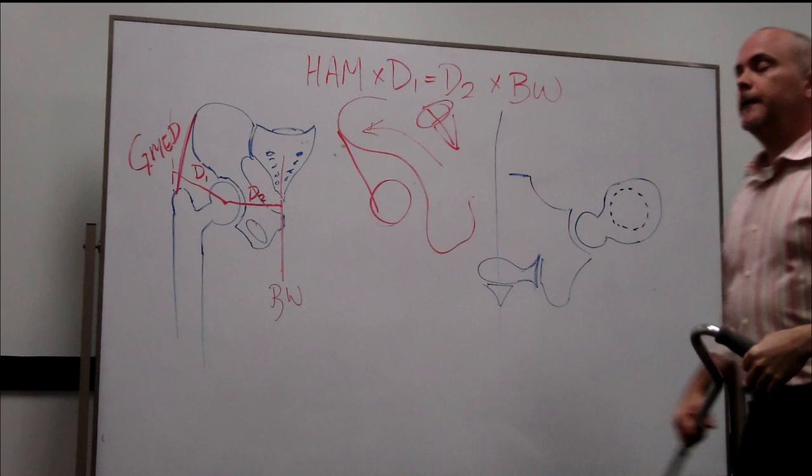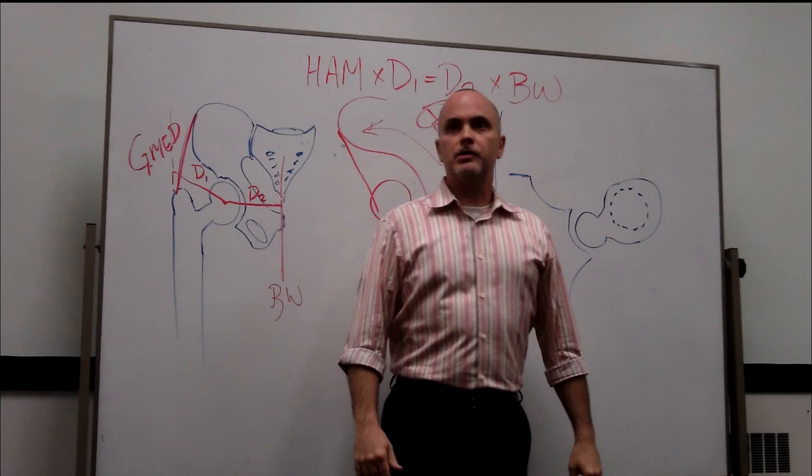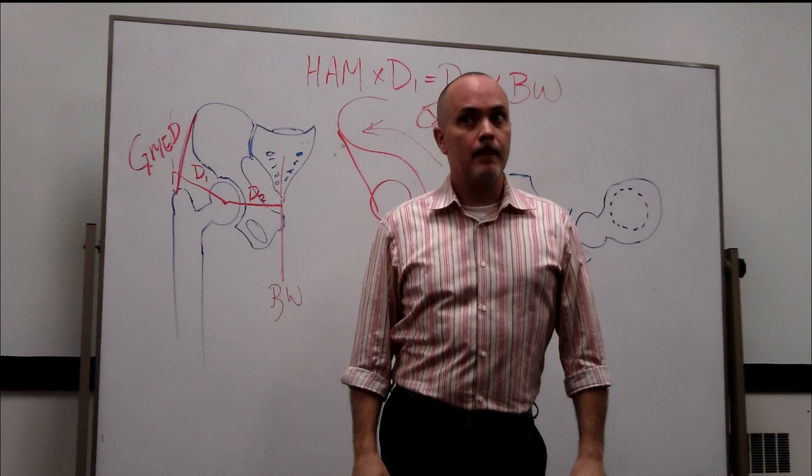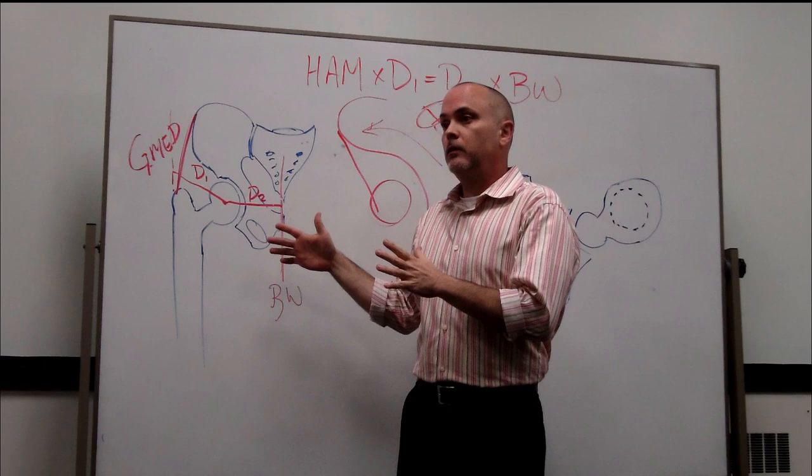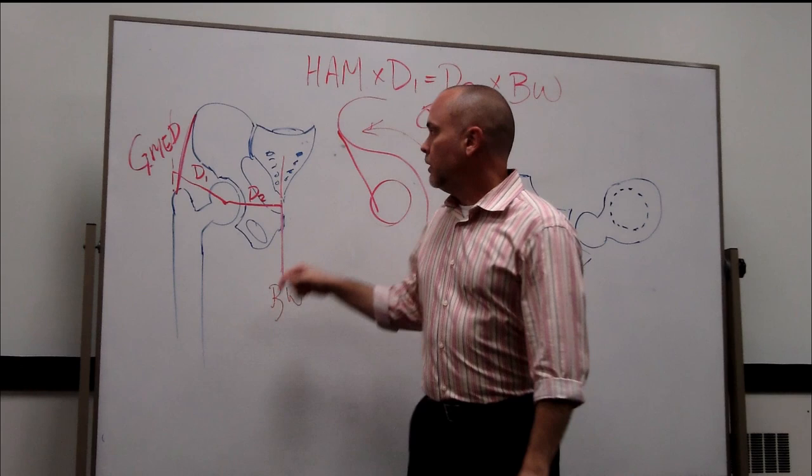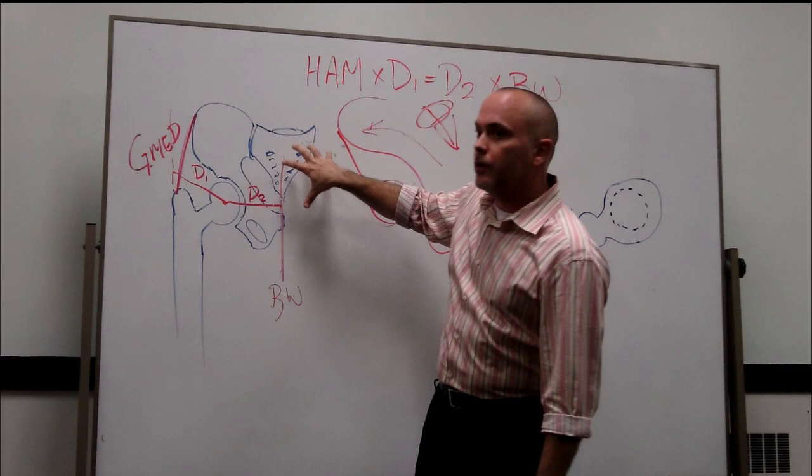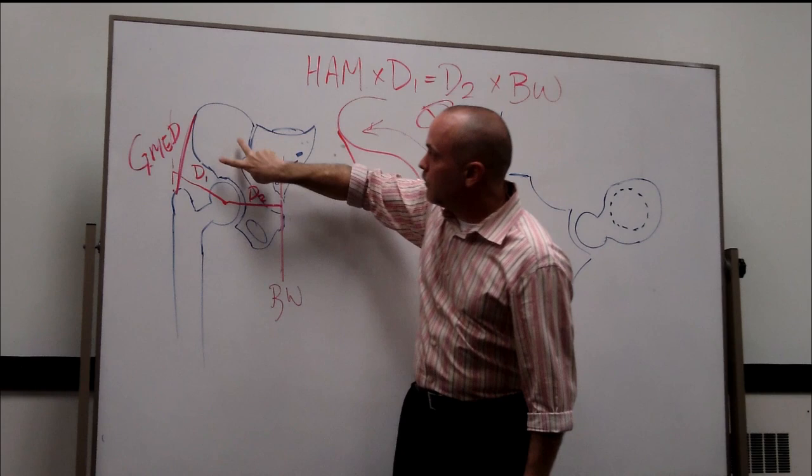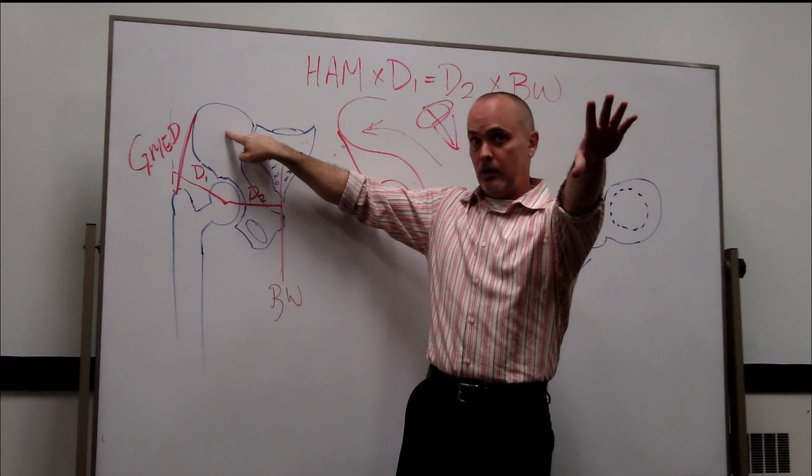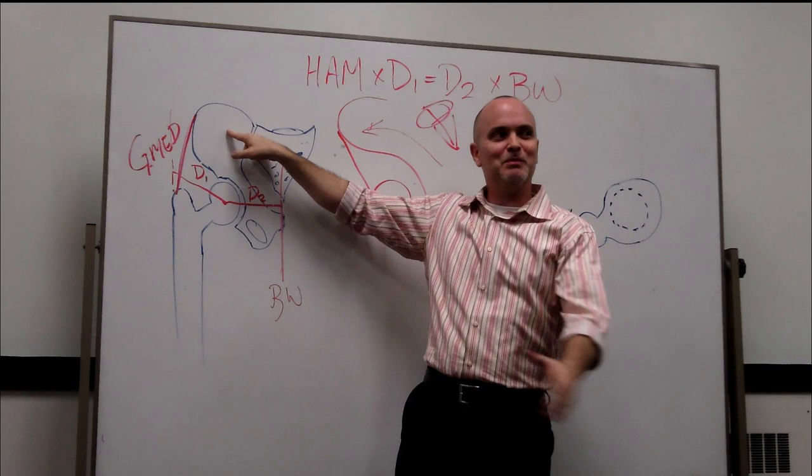Uncompensated Trendelenburg. Step, drop. Correct? That is, in fact, the pathologic Trendelenburg gait that you see. You with me? Step, drop. So body weight is winning. Because this is tipped over to here. As this pelvis drops over here on my left side, this gets carried over to here and my D1 gets shorter. Are you with me? Stop me if you're not, please. Do you agree that D1 gets shorter? Yeah. With conviction.